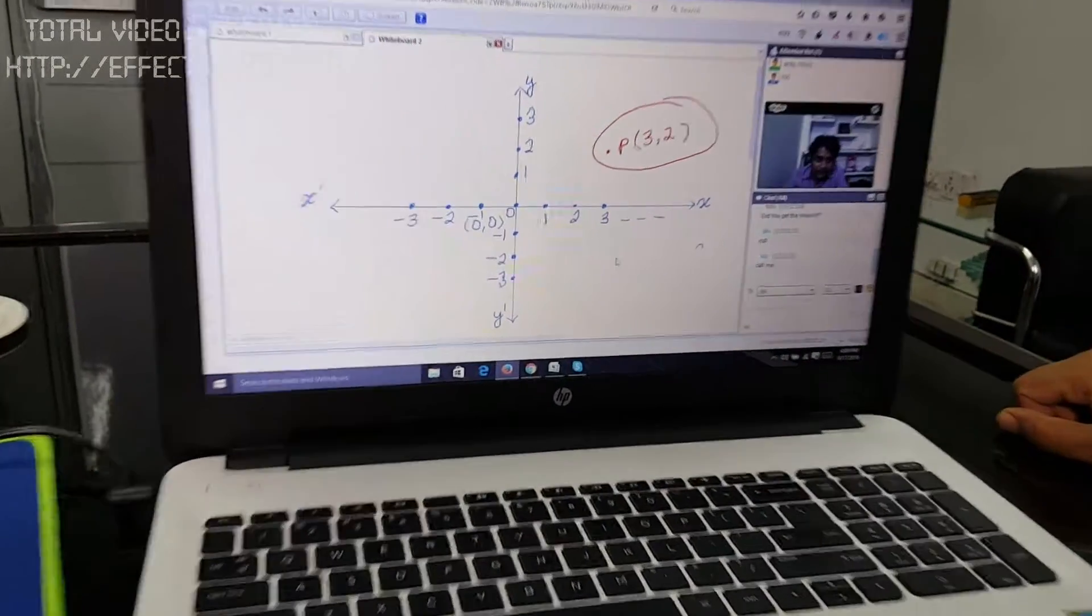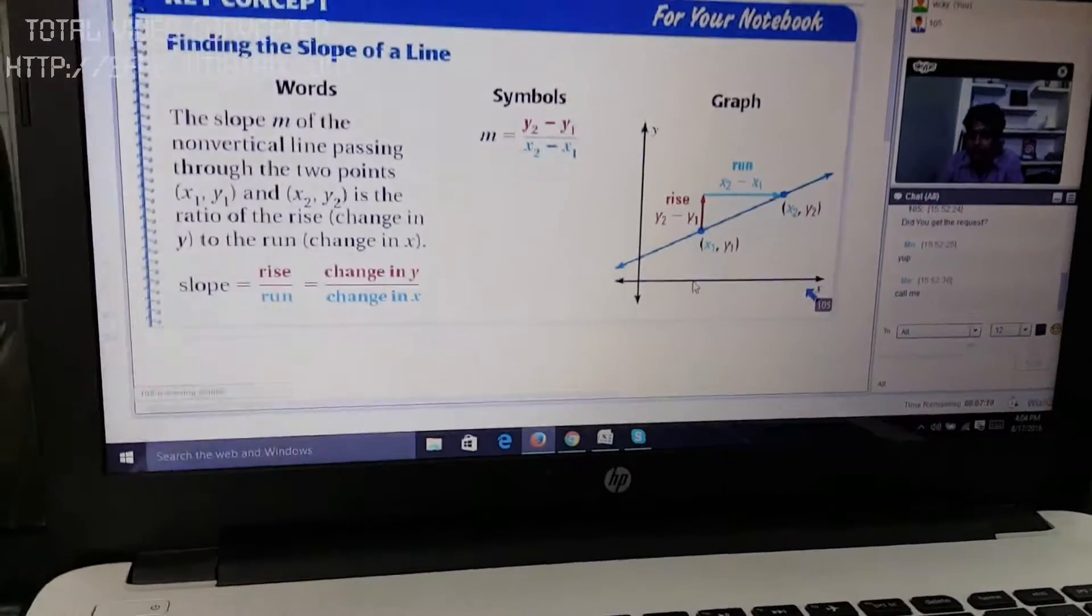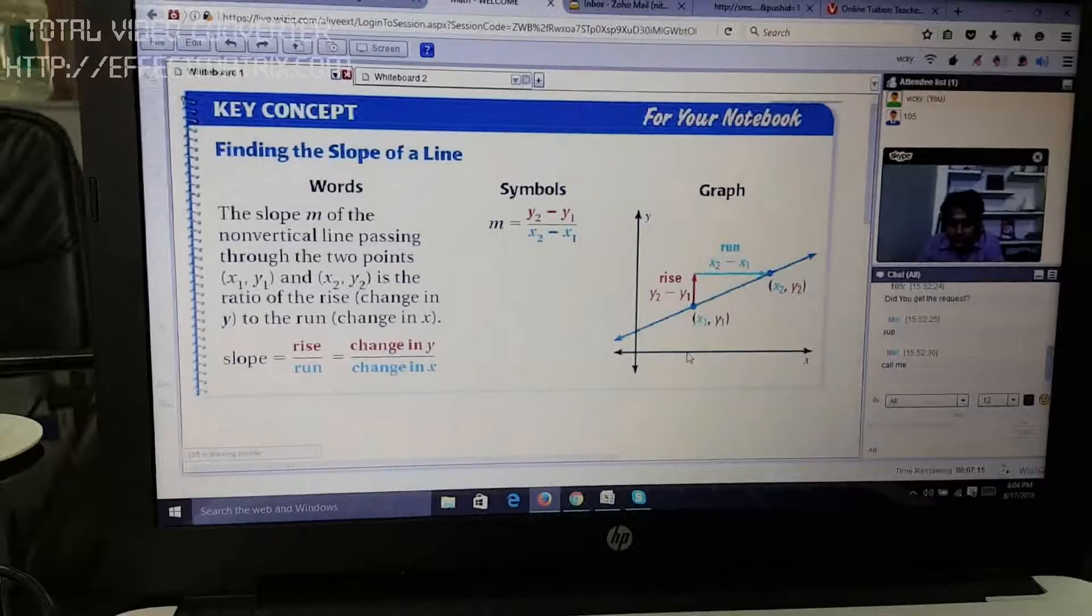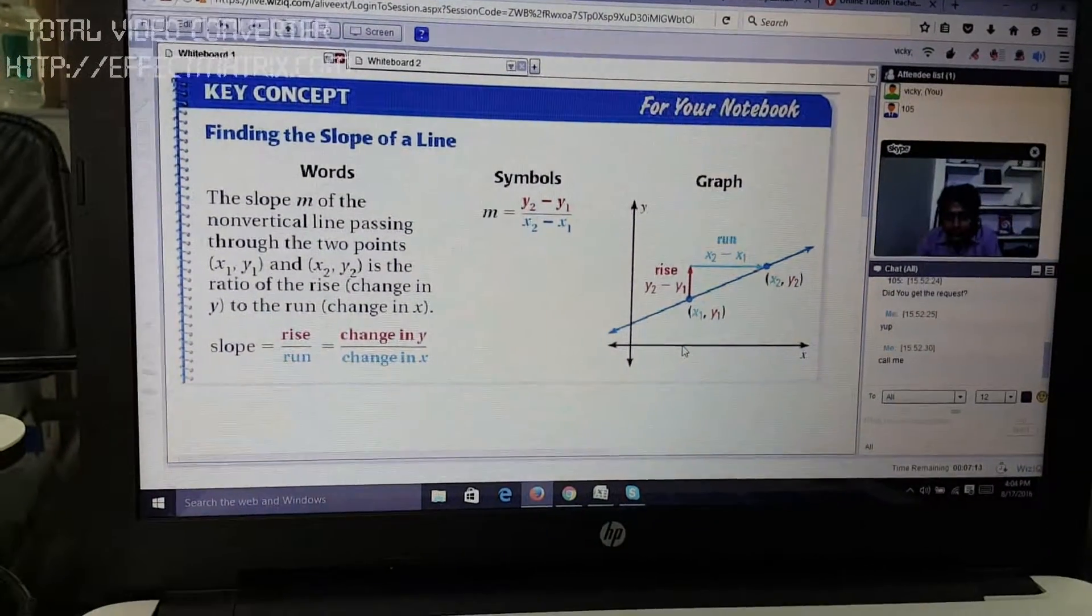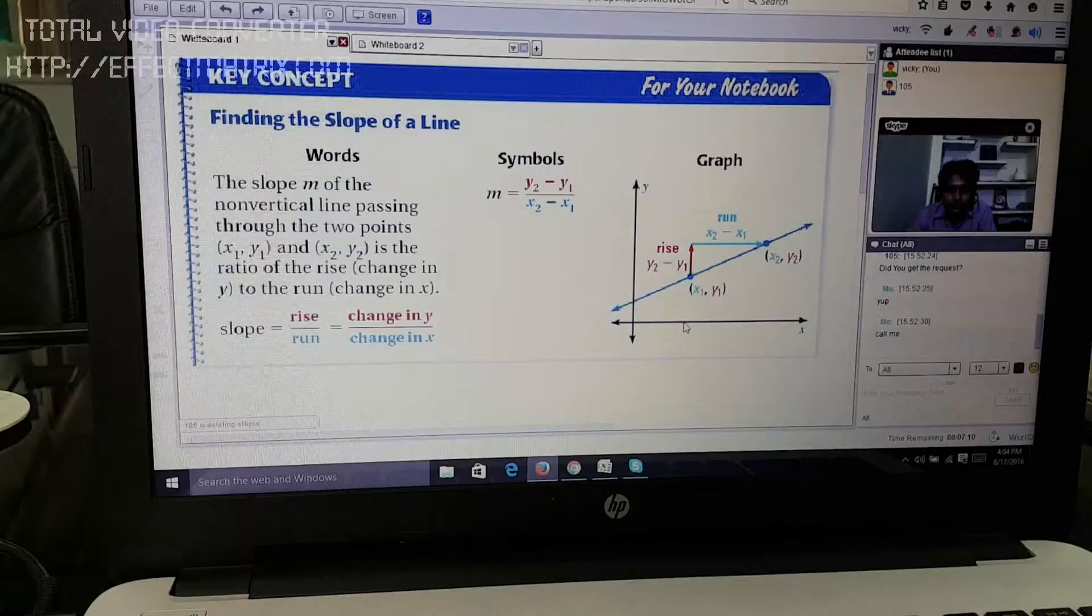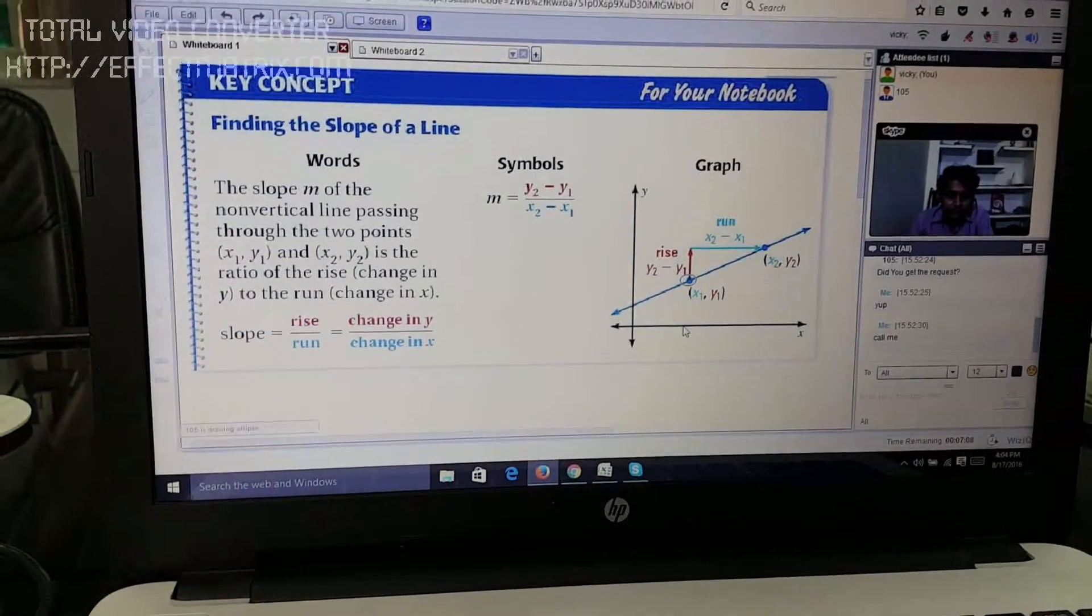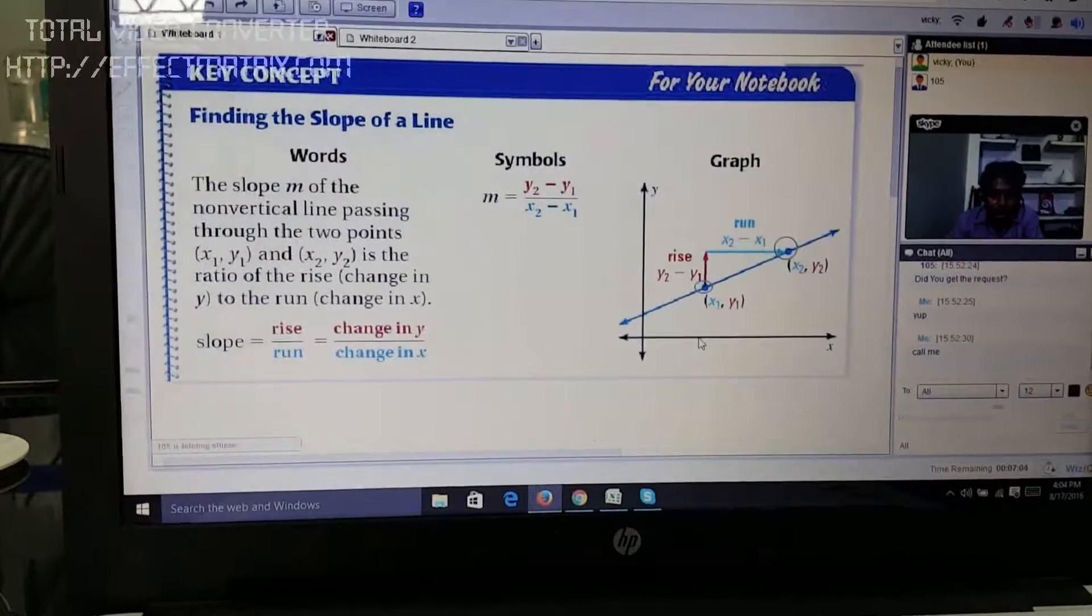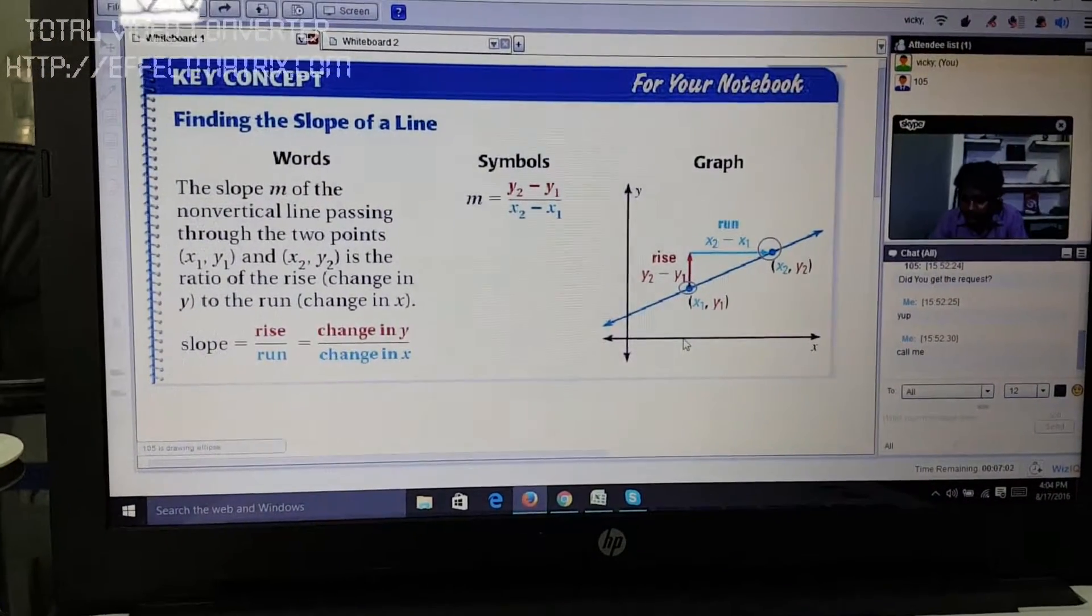So in that particular image, we have just extracted the first quadrant and suppose there are two points. Let me now show you. Suppose this is the first point whose coordinates have been considered as x1, y1. At the same time, we have been given another point x2, y2.